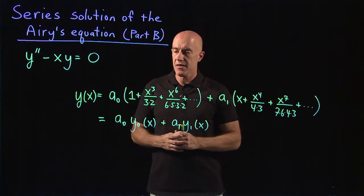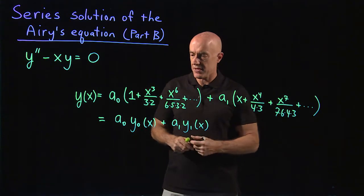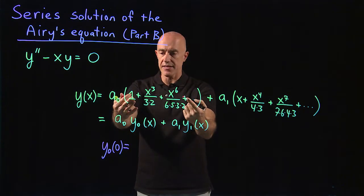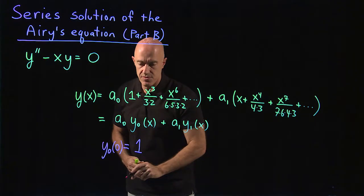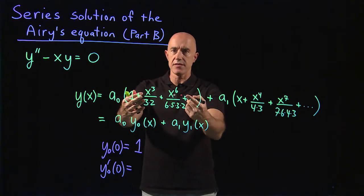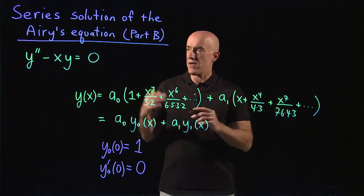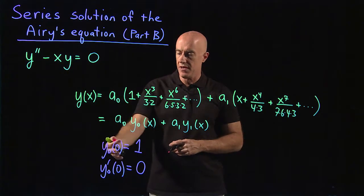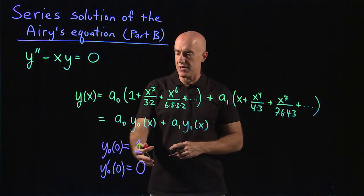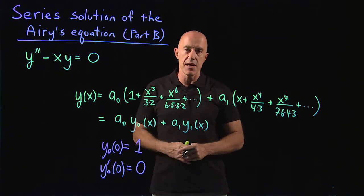So this y naught of x satisfies this differential equation with the following initial values. Y naught of 0, if you plug in x equals 0, this is 1. And y naught prime of 0, if you take the derivative of this, the leading term will be x squared, so that will be 0. If you solve this second order differential equation with the initial conditions y of 0 equals 1 and y prime of 0 equals 0, the solution you get is the solution of this function y naught of x represented by this power series.